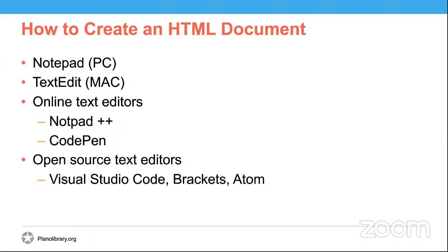There are two things that you need to create an HTML document: a web browser to view your HTML, and a text editor to create your document. While traditionally you would want to download an open-source text editor, as a beginner you can play around with online code editors. These editors are built into the browser and are user-friendly and quick in getting you started. You can start out with an online editor such as codepen.io, and then move on to an open-source editor like Visual Studio Code. Alternatively, if you're using a Windows computer you can use Notepad, and if you're on a Mac you can use TextEdit. In this program, we're going to be using codepen.io.